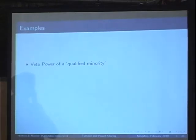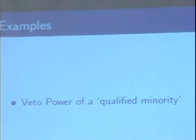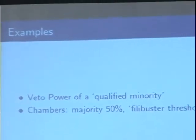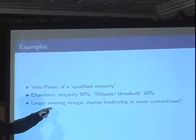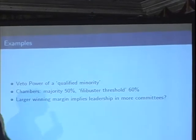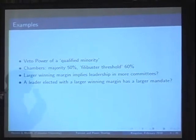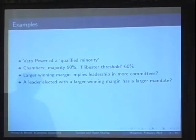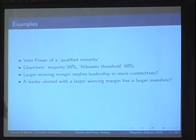There are examples of when a minority might count. A winning margin of 70% rather than 50.1% can mean more leadership and more committees. A winner elected with a larger margin — say 80% of the vote — probably has more power and more credibility than a winner winning with just 51% of the vote.